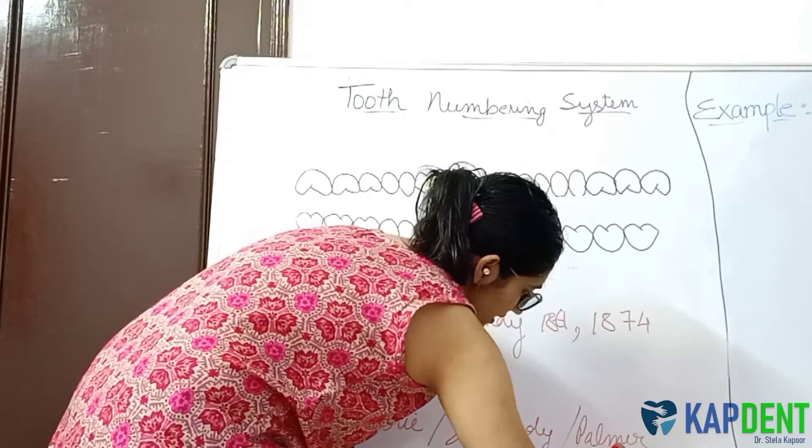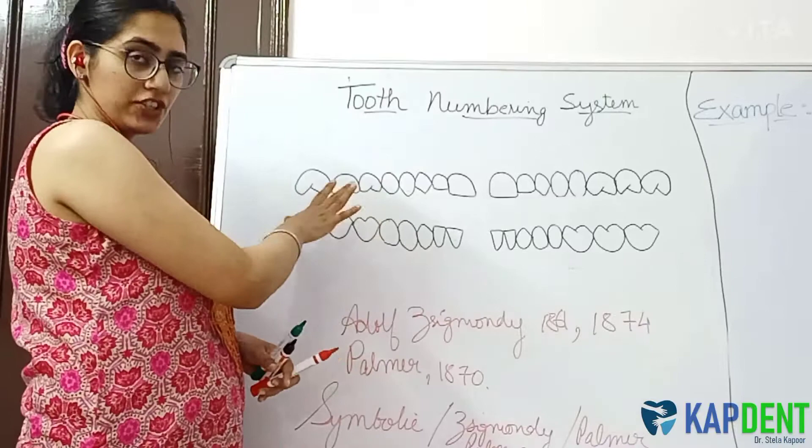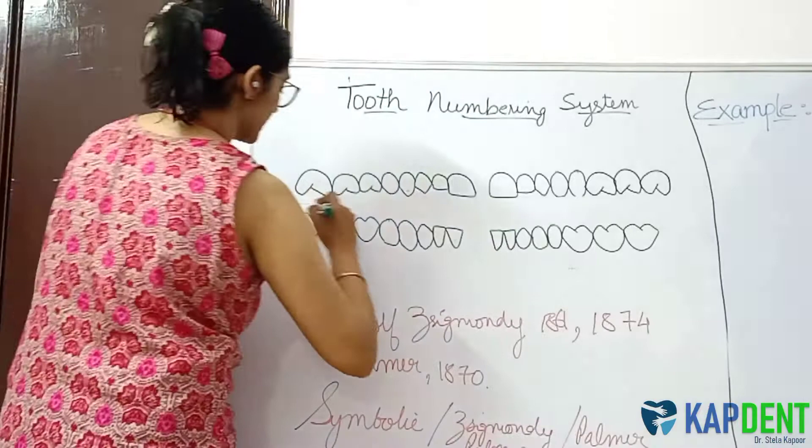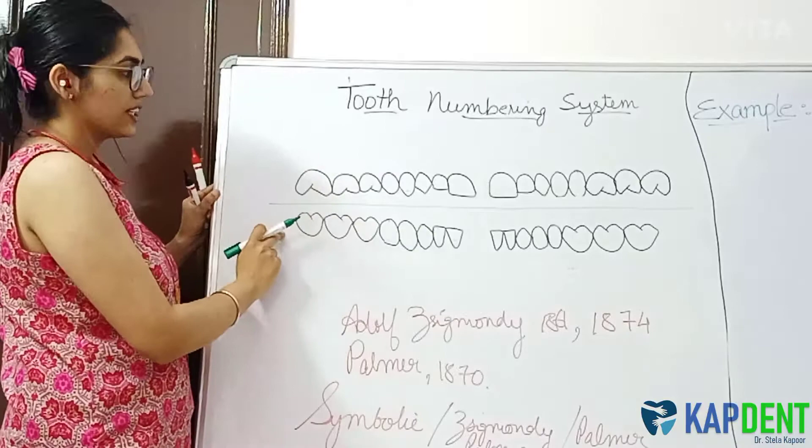As you can see, I have drawn your dentition, or your set of teeth. In this symbolic system, your dentition is divided into quadrants — that is, four parts — by two lines. The first line divides your teeth into those of the upper arch and those of the lower arch. The second is your mid-sagittal plane, which divides into the left and right side.